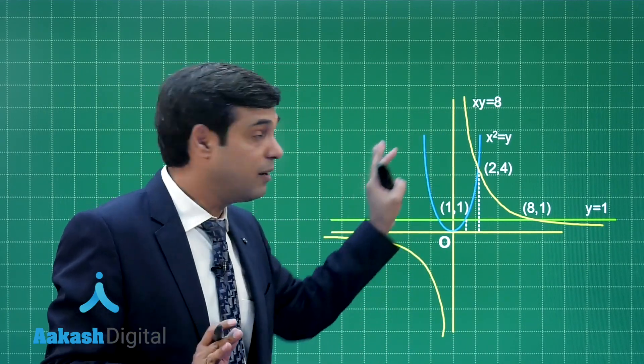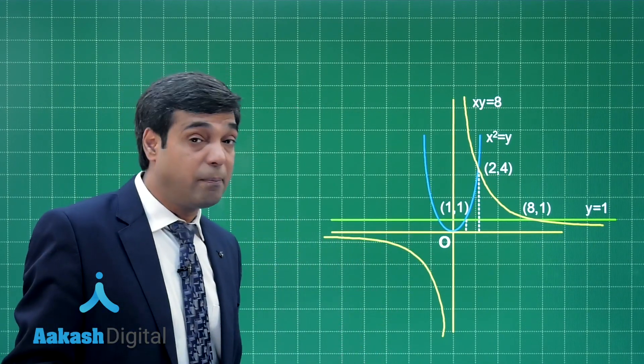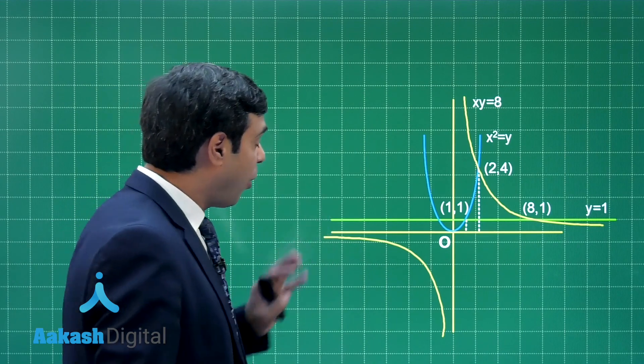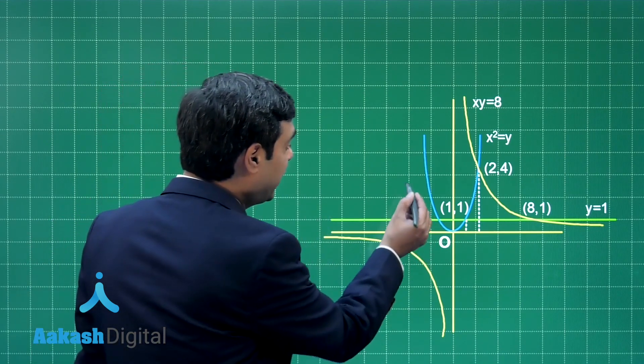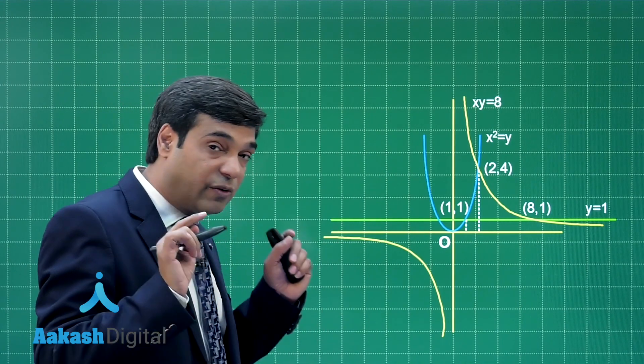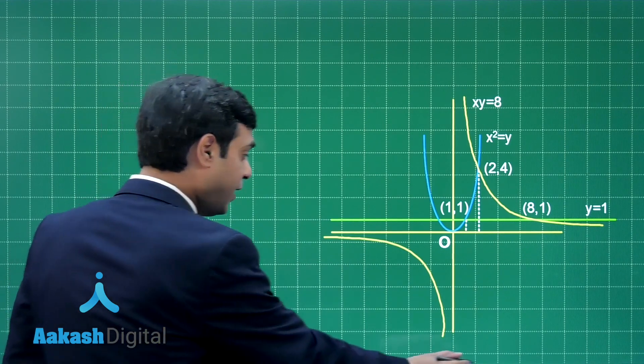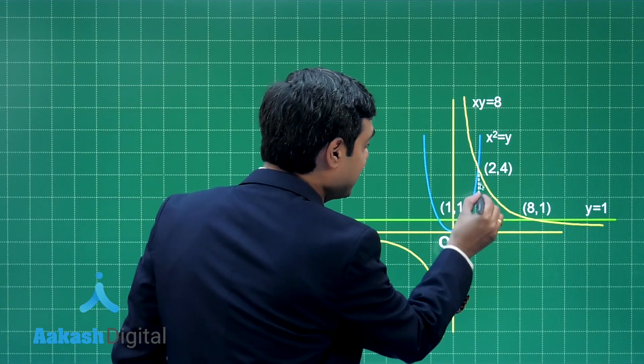The question says the region by these three curves. It is not mentioned anywhere it is the bounded one. So, we can also plan that the portion lying over here unbounded area is also correct. But if the question is talking about bounded region, then yes, the bounded one we can clearly say is this one.